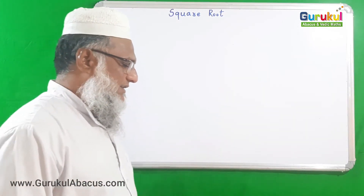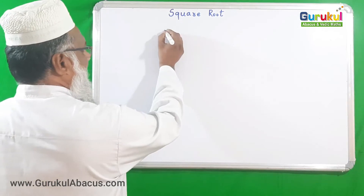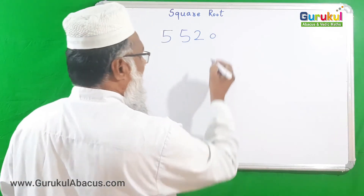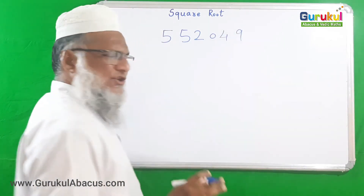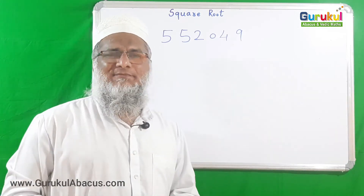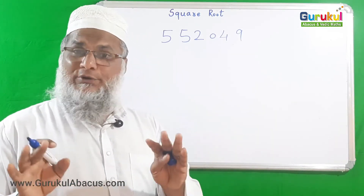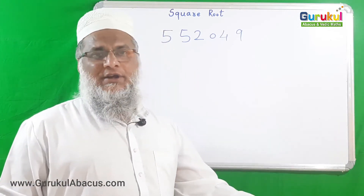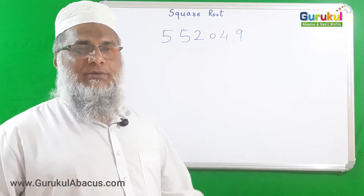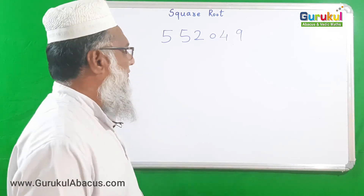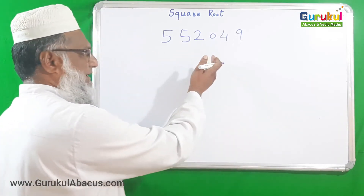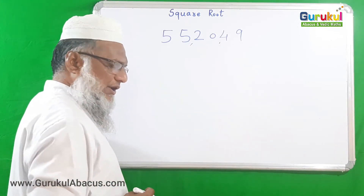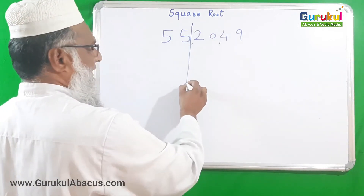The third example is 552049. This is also a complete square number. I mentioned we will take five to six examples of complete perfect squares and find their square roots, then move on to numbers that are not perfect squares. Here we have three pairs, so I put the separation lines before the first pair.